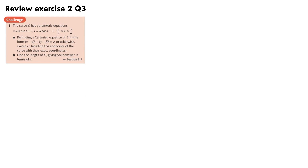For question 3, the curve C has parametric equations x equals 4 sine t plus 3 and y equals 4 cos t minus 1, for minus pi over 2 less than or equal to t less than or equal to pi over 4. For part A, find a Cartesian equation of C in the form (x minus a) squared plus (y minus b) squared equals c, and sketch C, labelling the endpoints with their exact coordinates.